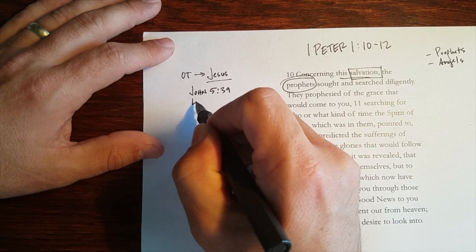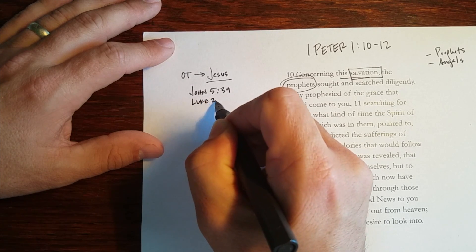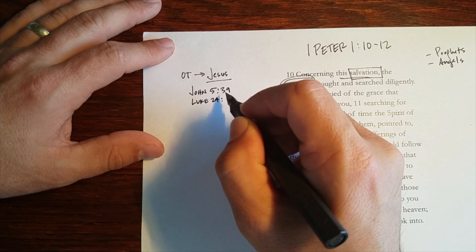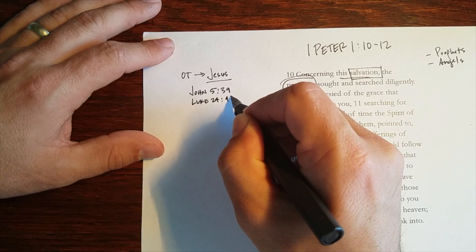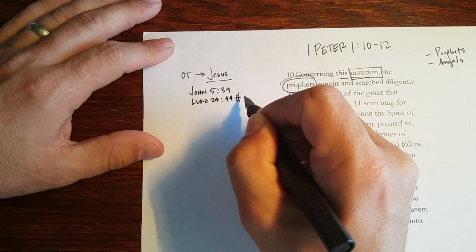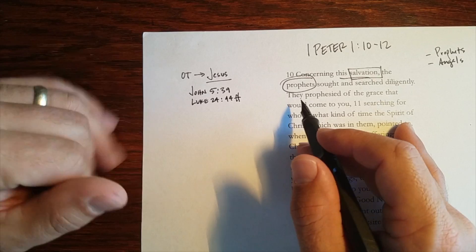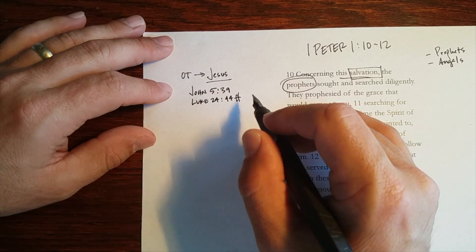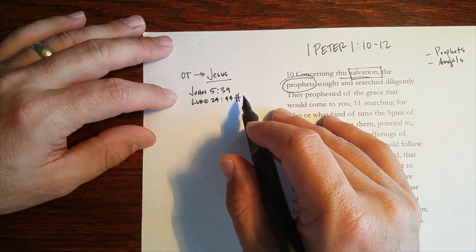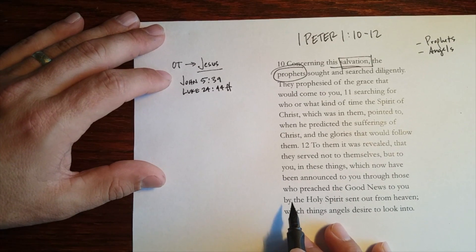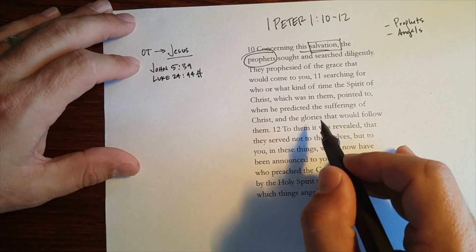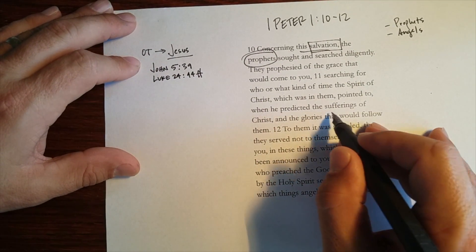The next is Luke chapter 24. Again, the text of Jesus, and it's him on the road to Emmaus and then afterwards, and it says that he opened up for them Moses and all the prophets, showing them that it was necessary for the Christ to suffer before he entered into his glory.